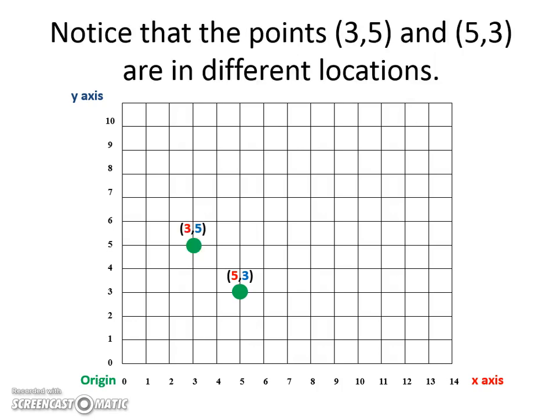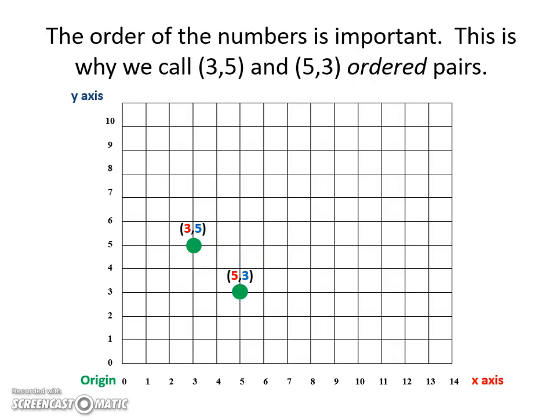Notice that the points (3, 5) that we plotted first and (5, 3) are in different locations. This is because we have something, our coordinate pairs or ordered pairs, the order that I put the numbers in the parentheses matter. That's why it's called an ordered pair. Order matters.